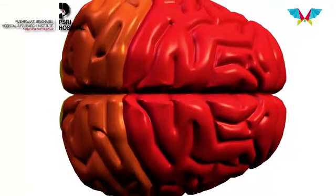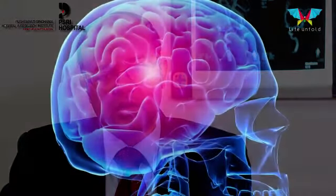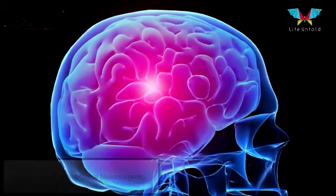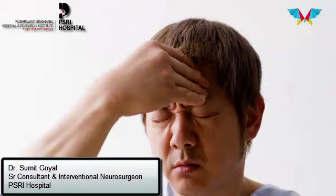Whenever this blood leaks into the brain substance, there is damage which would depend upon the site where the blood has leaked. There are different kinds of brain haemorrhages that we deal with. There can be hypertensive brain haemorrhage, which is seen in patients with high blood pressure. There can be aneurysmal subarachnoid haemorrhage, which is because of the dilatation of a blood vessel. There can also be extra-axial brain haemorrhages like subdural haemorrhages or extradural haemorrhages, which can occur because of trauma.